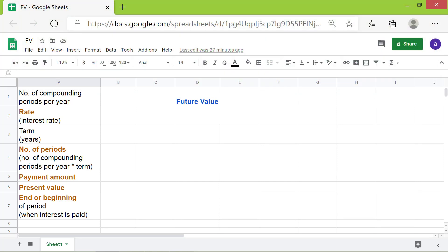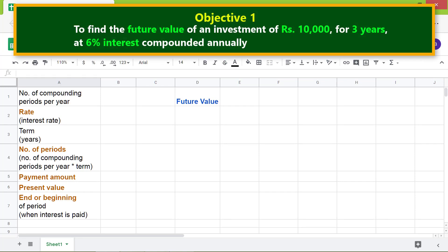Let me type the data for the first objective in this table. For the number of compounding periods per year, I will type 1 because interest is compounded annually. Let me format this cell as percent. Click the percent symbol. For the interest rate, I will type 6.